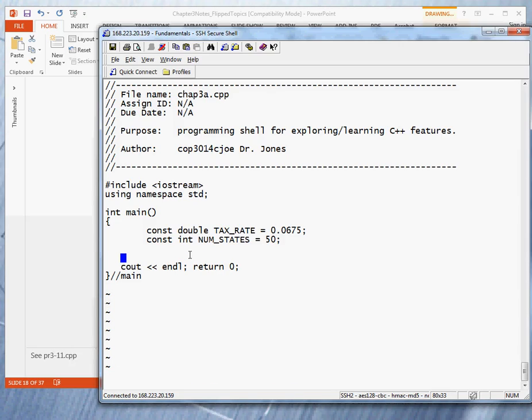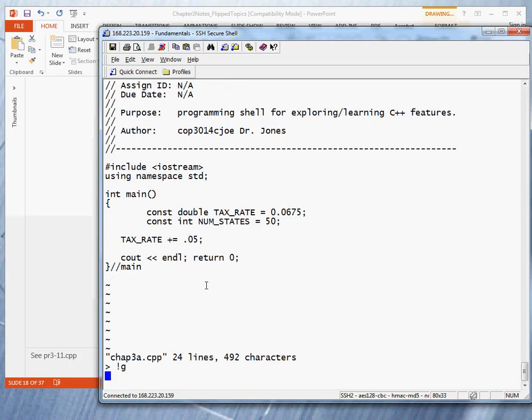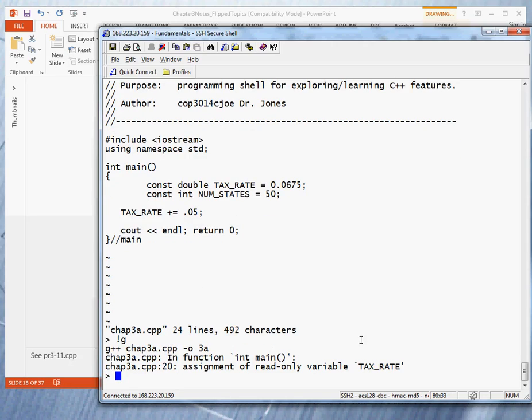And let's go in and make an attempt to change it. So why don't we say tax rate plus equal 0.5. What statement is that? What are we doing? We want to update tax rate by adding 0.5 to it. Remember, we just talked about the combined operators. Let's see what happens when we try that. I'm going to try to compile. And what do we have? It says assignment. We have an error by trying to make an assignment to a read-only variable tax rate.